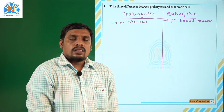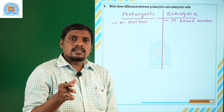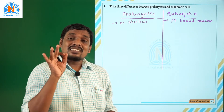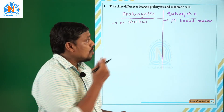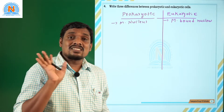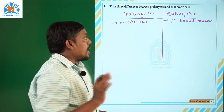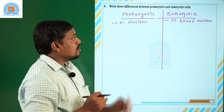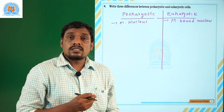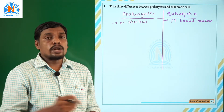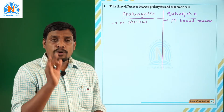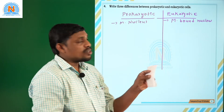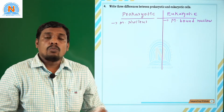Prokaryotic cells are lesser in size, whereas eukaryotic cells have bigger-sized cells. Also, prokaryotic organisms have a lesser number of cells, whereas eukaryotic organisms have more number of cells.